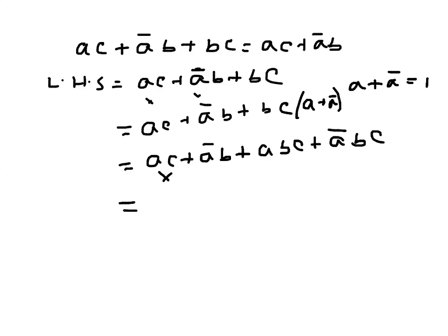Now from this one and this one, you can take AC out, so it's becoming 1 plus B. And from this one and this one, I can take A̅B out, so again it's becoming 1 plus C.